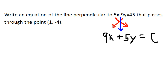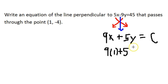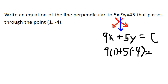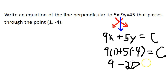We have to figure out what c is, so we're going to take the x-coordinate and y-coordinate of the given point and plug them into the x and y variables in our equation. We get 9 times 1 plus 5 times negative 4 is equal to c. So we have 9 minus 20 is equal to c.